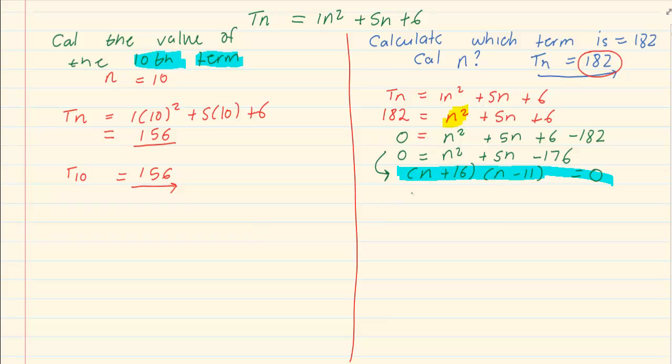Once we solve, we have n is equal to negative 16 and n is equal to 11. Now both of them cannot be correct. In number patterns, the n is a natural number, which means it cannot be a negative, neither can it be a 0. Therefore, when they have n is equal to minus 16, that answer is not accepted. The only answer that is accepted is that n is equal to 11.